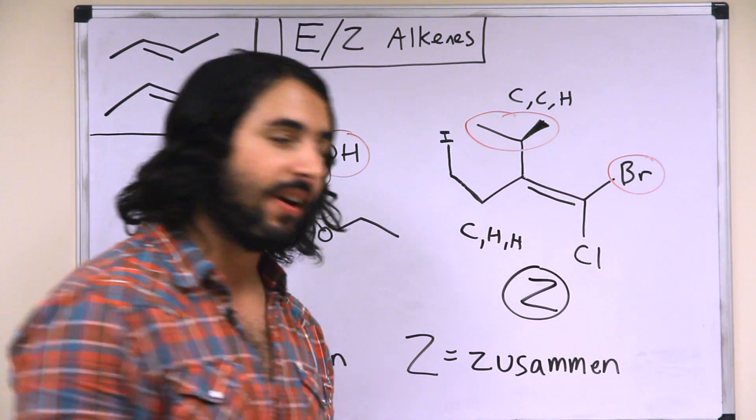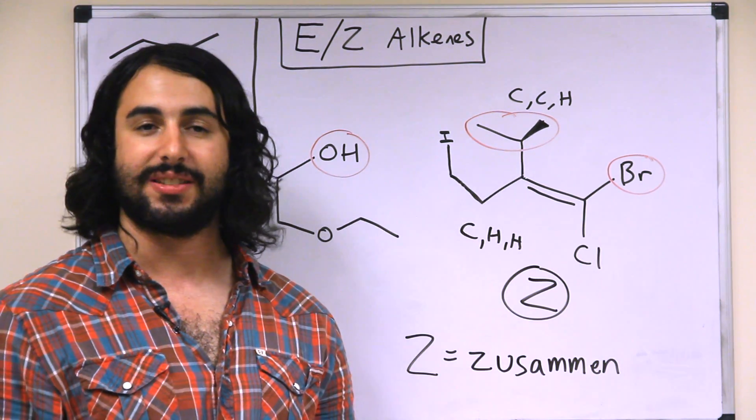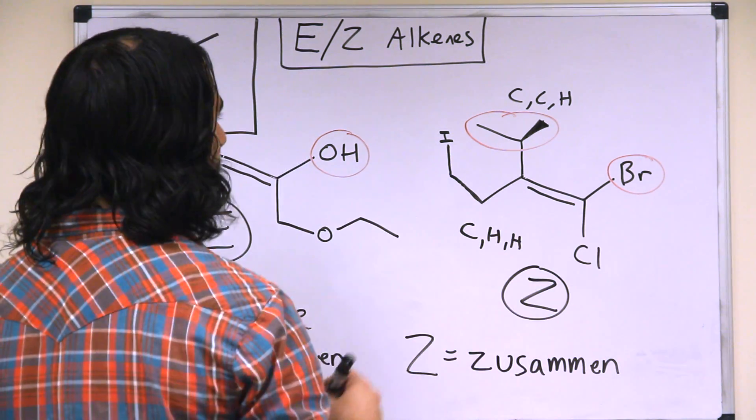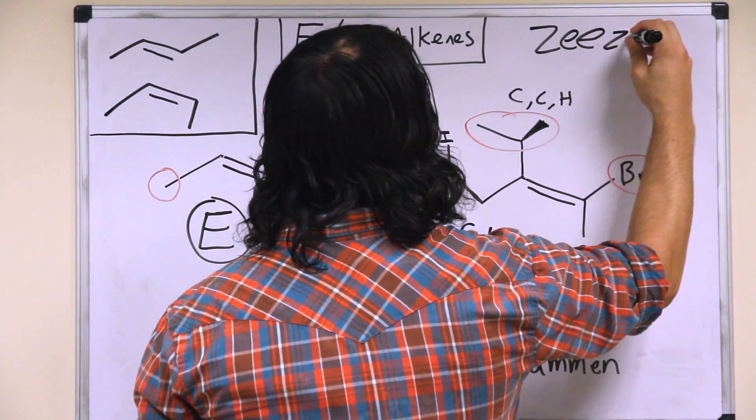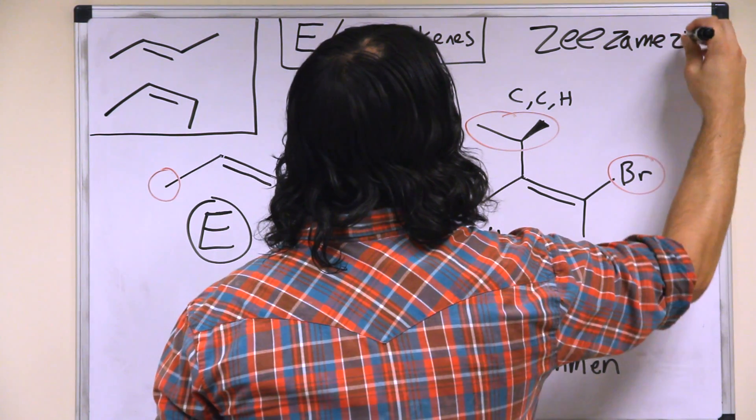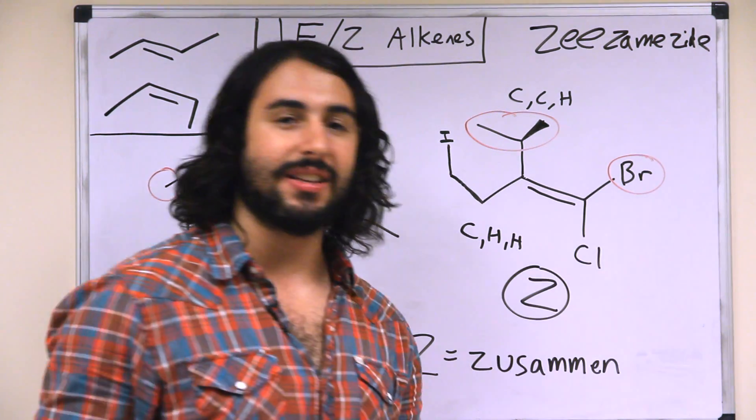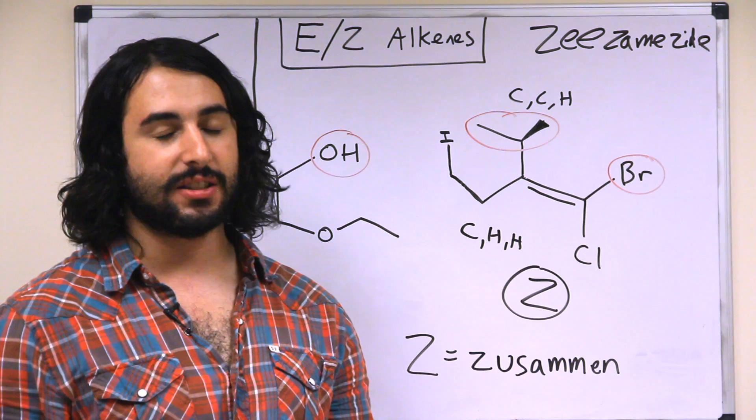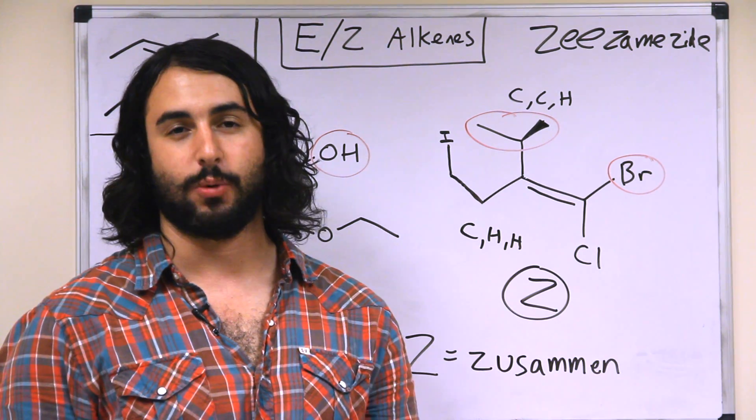And if you want a very easy way to remember which one is E and which one is Z, we just have to know Z same side. So if you know that Z means Z same side, it's a little bit silly, but you'll never forget what E and Z mean.